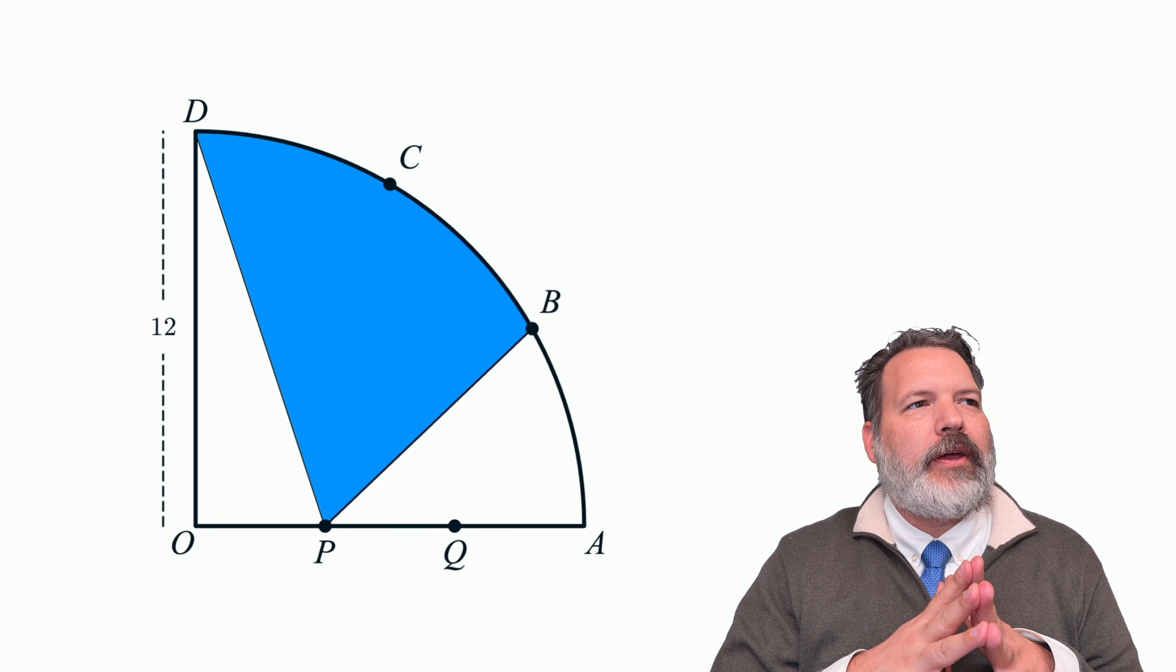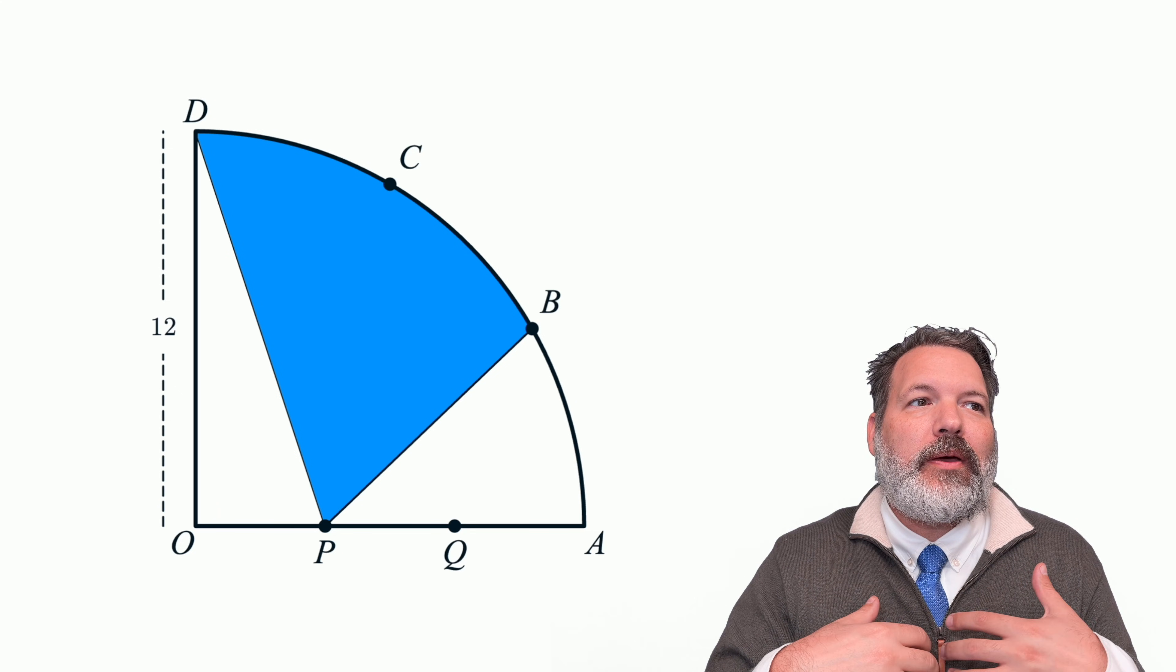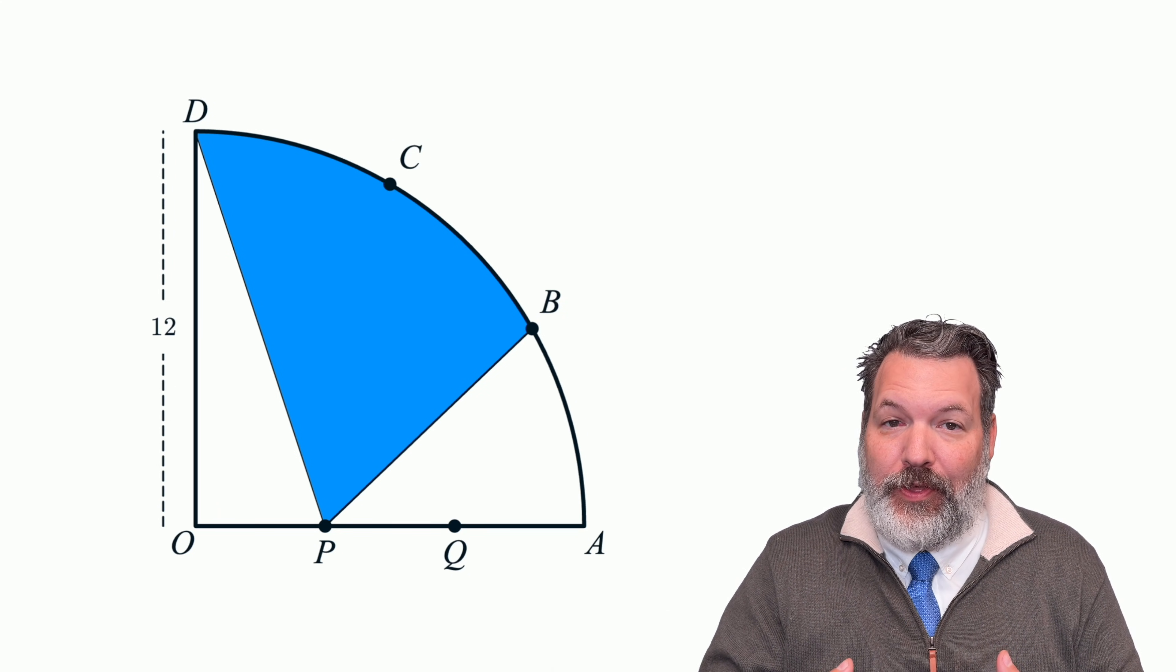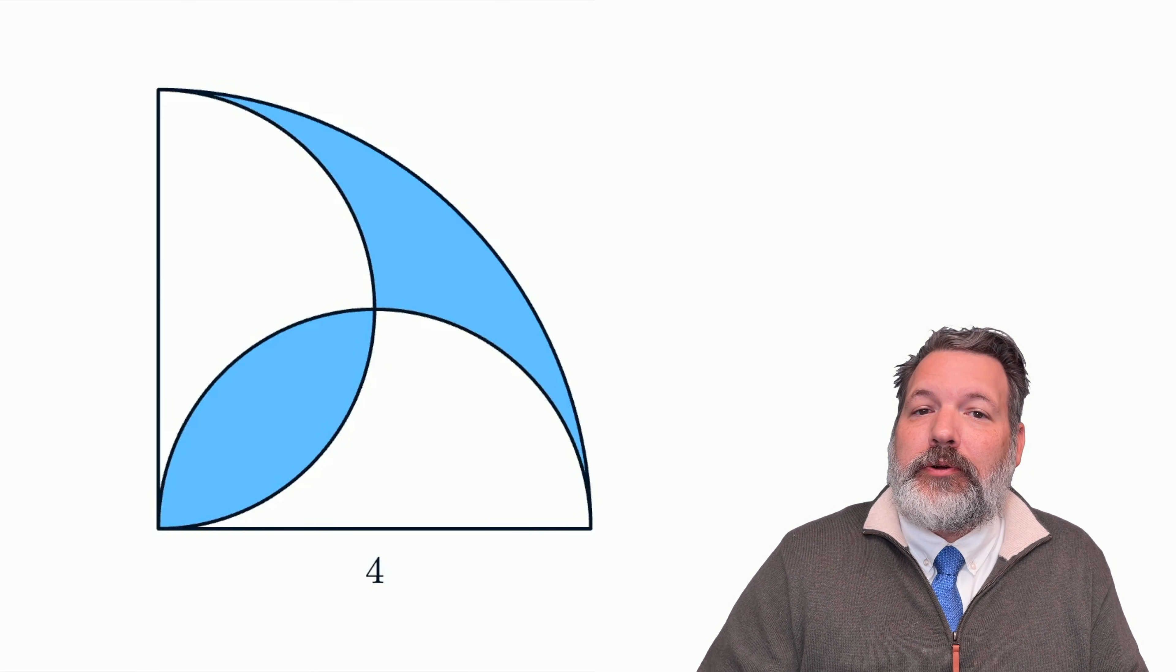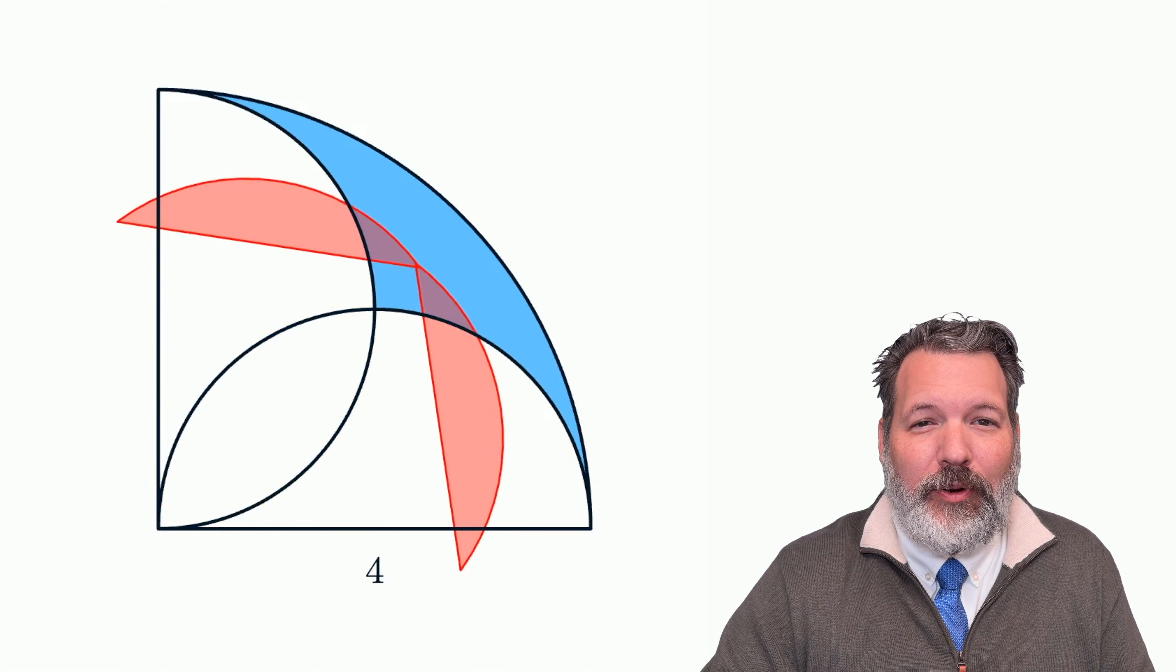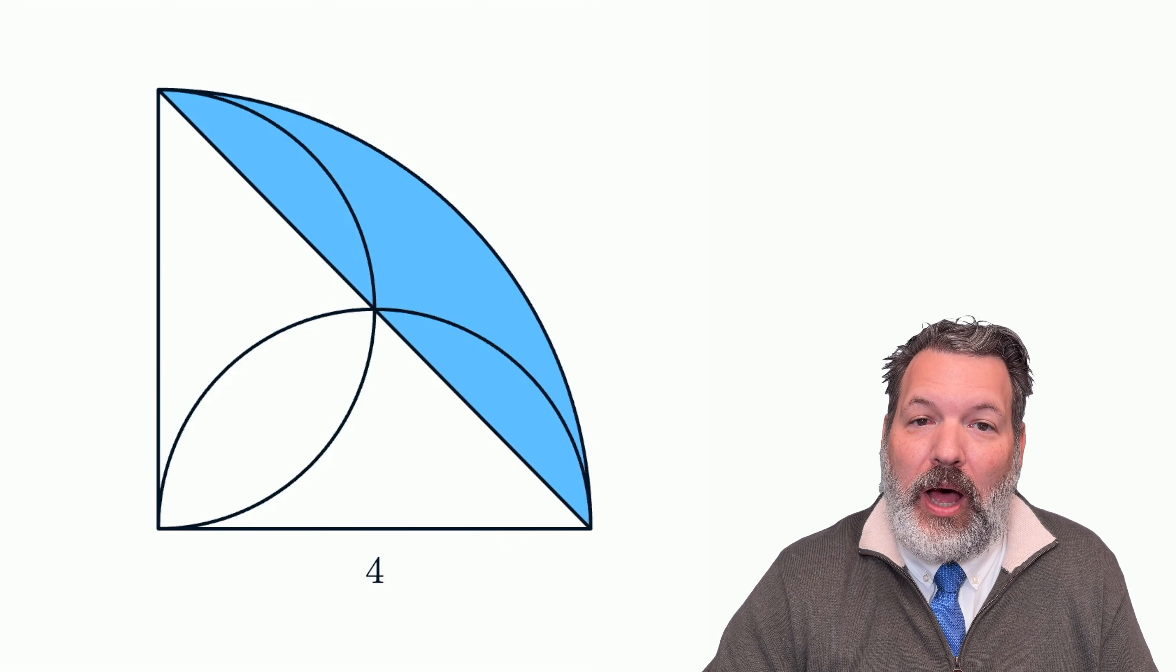Shaded region area questions, also sometimes called composite region area questions, are usually about what regions you can find the area of and then add those areas together. Sometimes shaded region area questions really should be approached this way. This is a quarter circle area problem I've done before, where if we can be clever about how the different pieces fit together, we can find the area by adding them up.